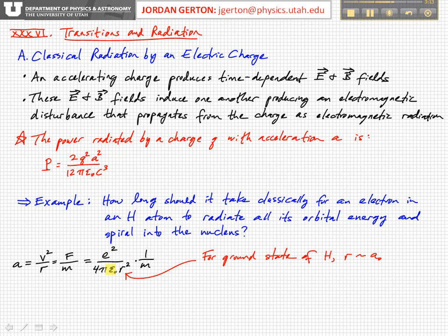If we plug in for the force, the Coulomb force on an electron by the nucleus, we get e squared over 4 pi epsilon naught r squared, that's the Coulomb force, the Coulomb attractive force, and then we multiply by 1 over m. So this is the acceleration of a classical electron going around in an orbit.